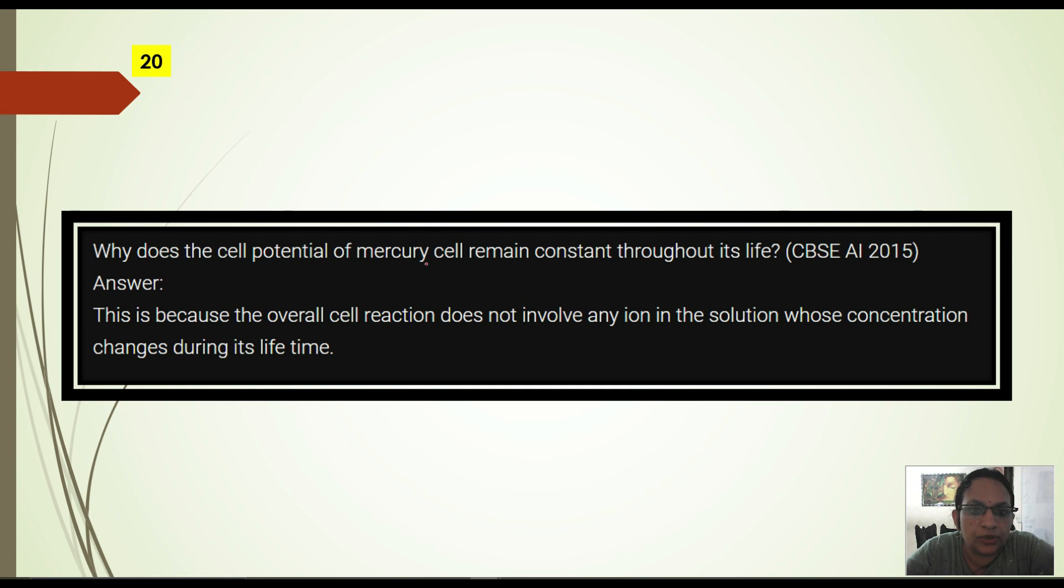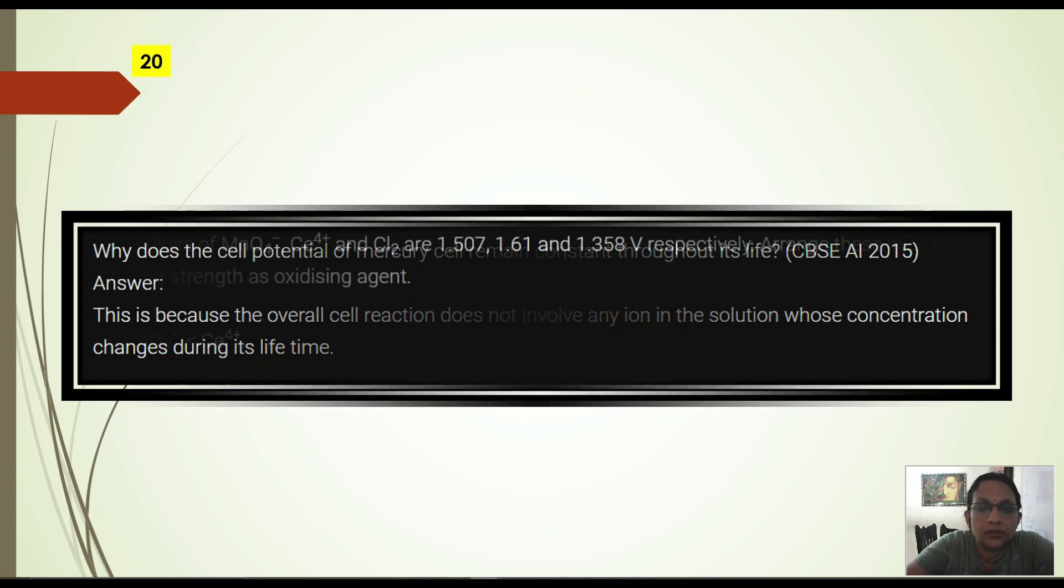Why does the cell potential of mercury remain constant throughout its life? Mercury cell potential remains constant. The overall cell reaction does not involve any ion in the solution whose concentration changes during its lifetime. For this reason mercury cell potential remains constant.